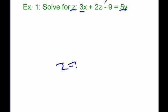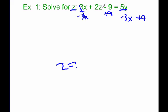So our first step we really have to do is to undo any adding and subtracting. I'm going to undo all of the adding and subtracting in one step. This is a positive 3x, so to get rid of it I'm going to subtract 3x from both sides — they cancel. Then I want to get rid of this minus 9 by adding 9 to both sides. On the left, I'm left with just 2z, and on the right I now have 5y minus 3x plus 9.